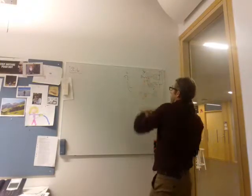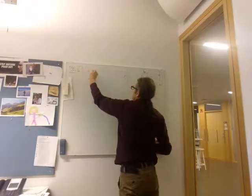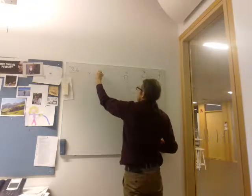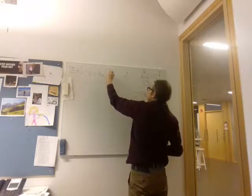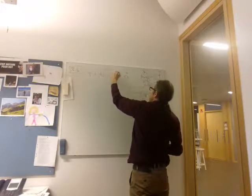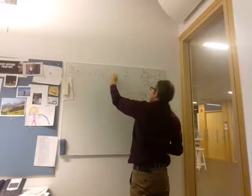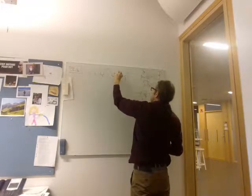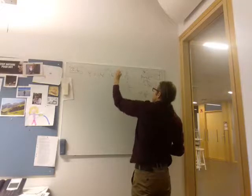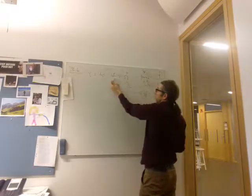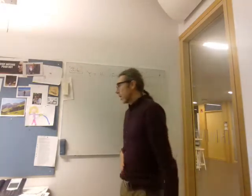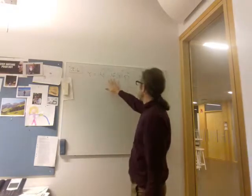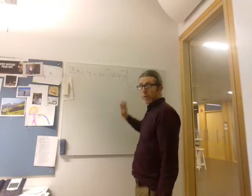So the production function here is like Y equals ALL to the 1 minus alpha, and then AC times C plus AD times D to the alpha. So these are perfect substitutes. You just add them together. But we don't need any of that, actually, to answer the question.